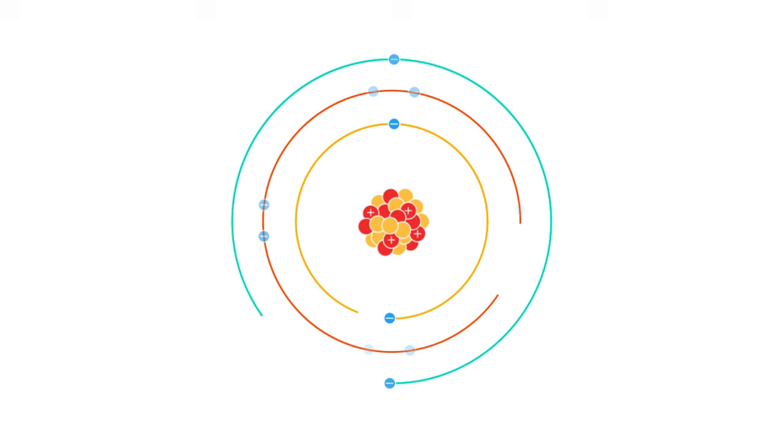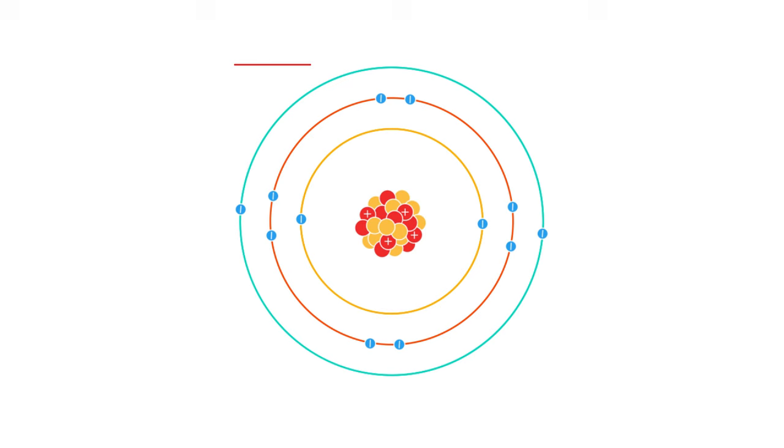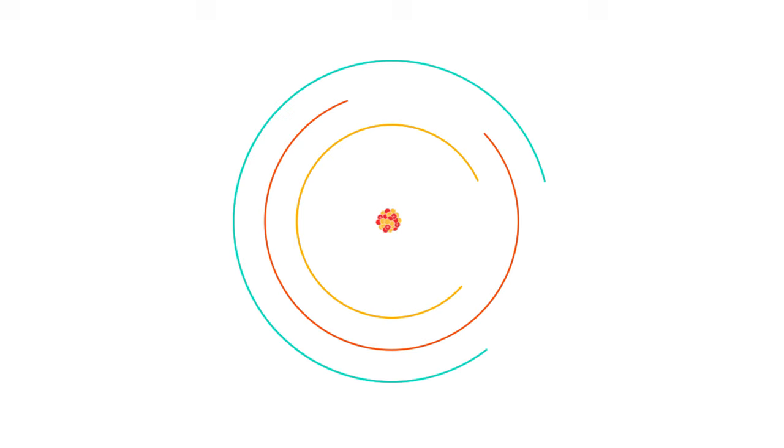We didn't always know what the atom looked like. Even today we're not entirely sure, but we have a far better idea than ever before. In this video we're going to look at the evolution of atomic theory. Before we start, you should have a general idea of the structure of an atom, so you may want to watch this video first.